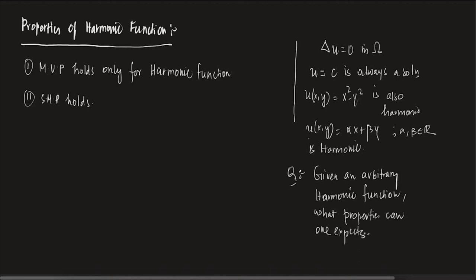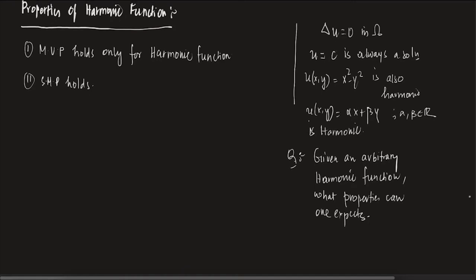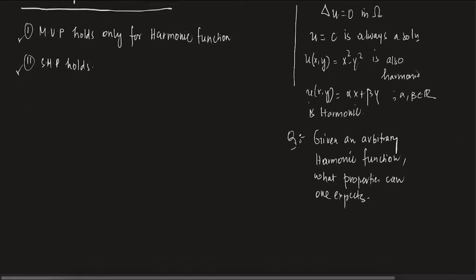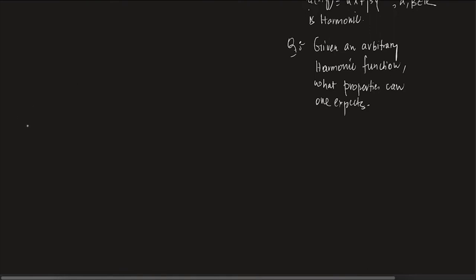It turns out that harmonic functions are very special. We saw that there is the mean value property, the strong maximum principle, and positivity — all of which hold for harmonic functions. Today we are going to prove something different: a different form of property called regularity.